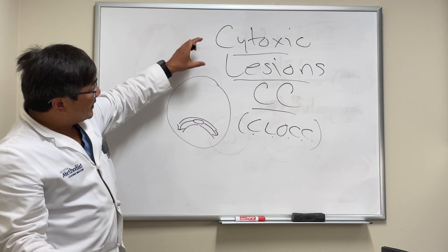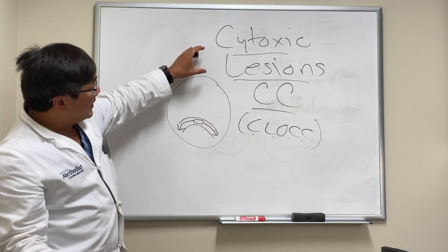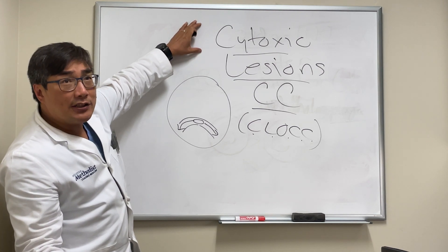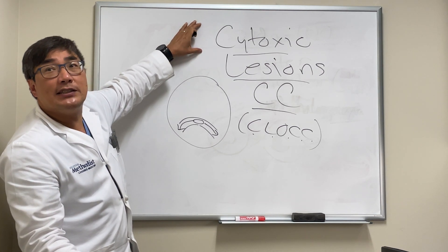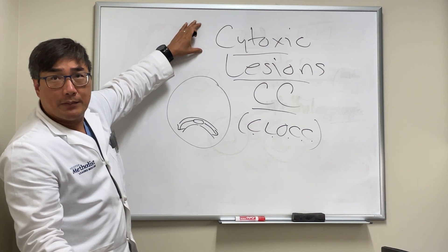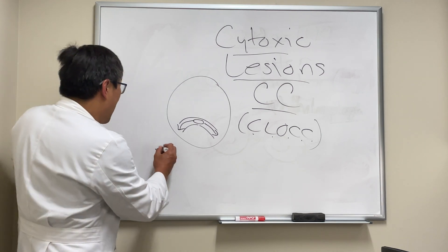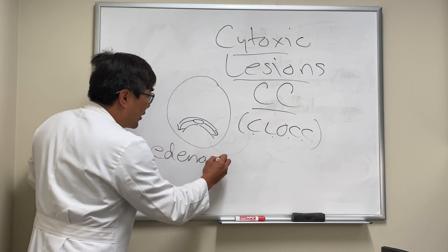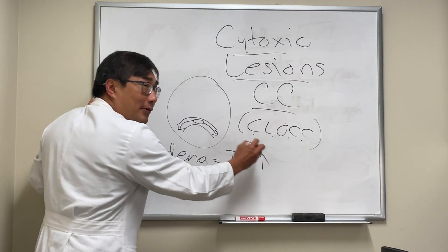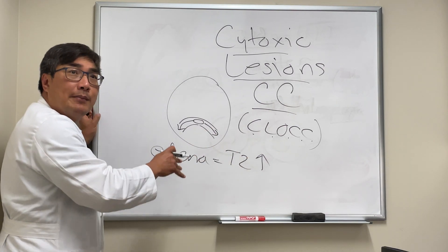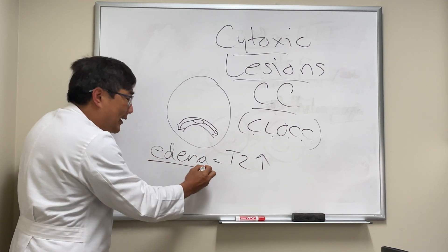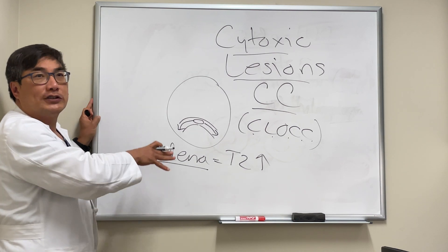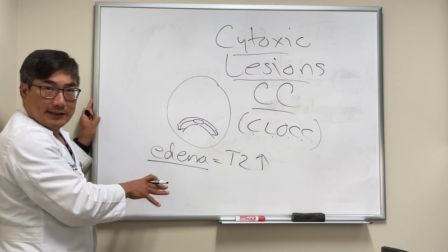One of the interesting things about these lesions is we can tell if it's cytotoxic edema using diffusion weighted imaging. On MRI, edema appears as T2 hyperintensity, but that T2 hyperintensity does not tell us whether this is vasogenic edema or cytotoxic edema.